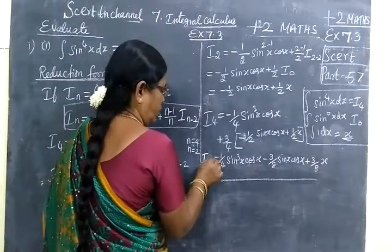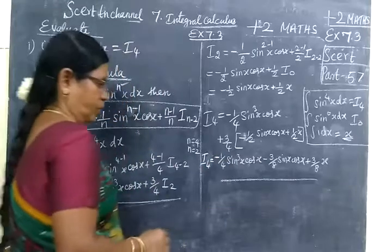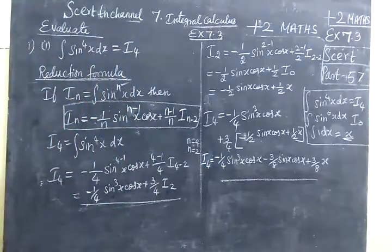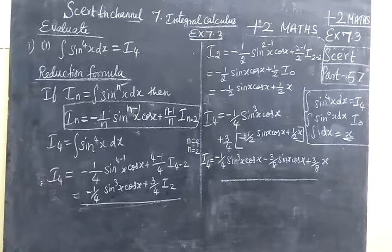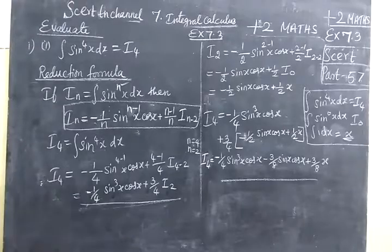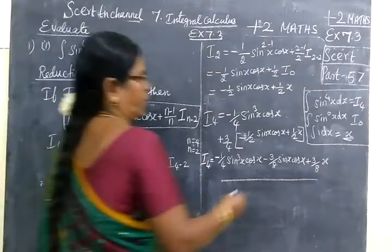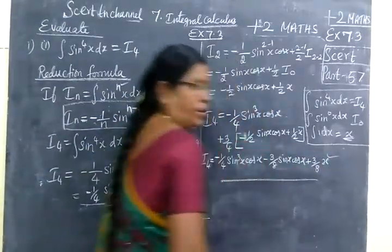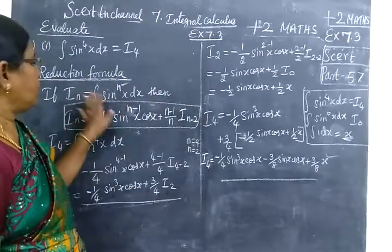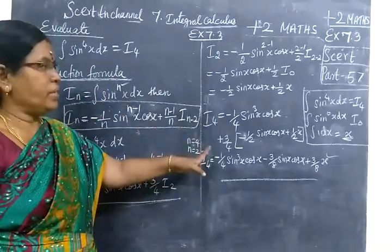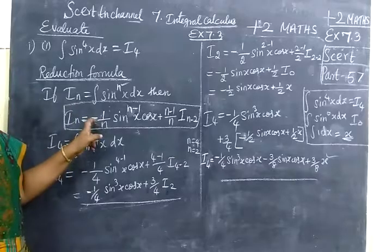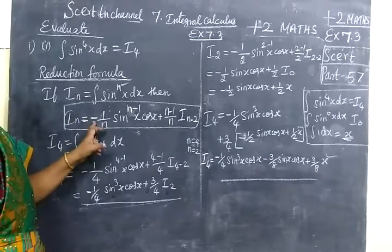So we set the answer for this. Minus 1 by 4 sin³x cos x minus 3 by 8 sin x cos x plus 3 by 8 x.